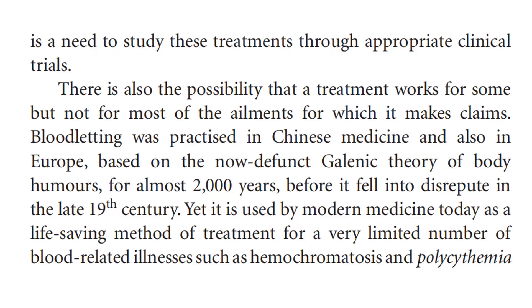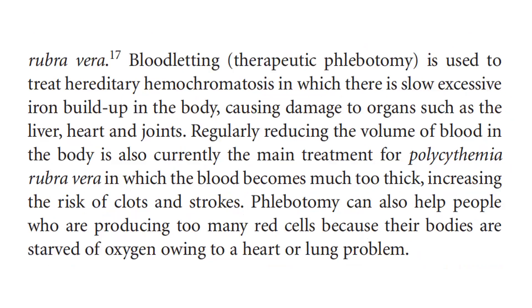Such conditions include hemochromatosis, polycythemia, and polycythemia vera. Blood letting was used to treat hereditary hemochromatosis, in which there is slow, excessive iron buildup in the body causing damage to organs such as the liver, heart, and joints. Regularly reducing the volume of blood in the body is also currently the main treatment for polycythemia vera, in which the blood becomes much too thick, increasing the risk of blood clots. Phlebotomy can also help people who are producing too many red cells because their bodies are starved of oxygen due to a lung problem.